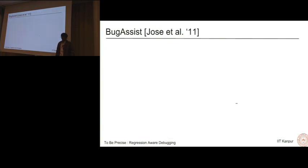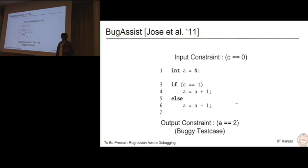This was incorporated in BugAssist, a tool by Jose et al in PLDI 2011. Consider this particular program. The input is that the variable c is 0, the output is that the variable a needs to be 2. We all know that a program can be expressed as a logical formula. We can see that this is a buggy test case. For input c which is 0, we actually get the output as -1. Let's see how BugAssist works. If we relax a particular statement, say we relax the statement a = a + 1, what we are doing is disregarding the RHS. We throw away a + 1 and we can assign any random value to a.